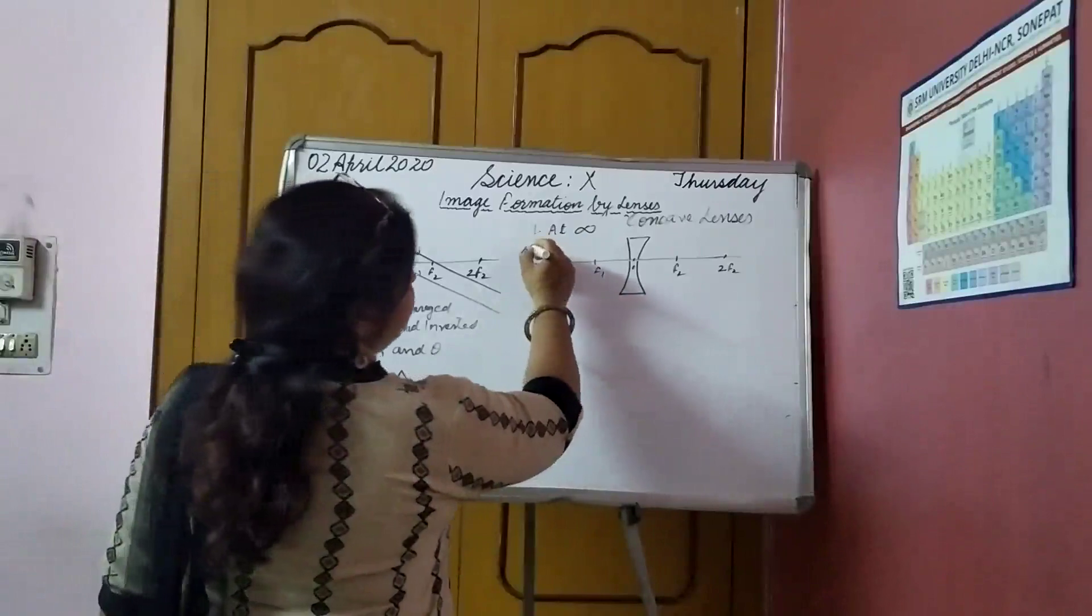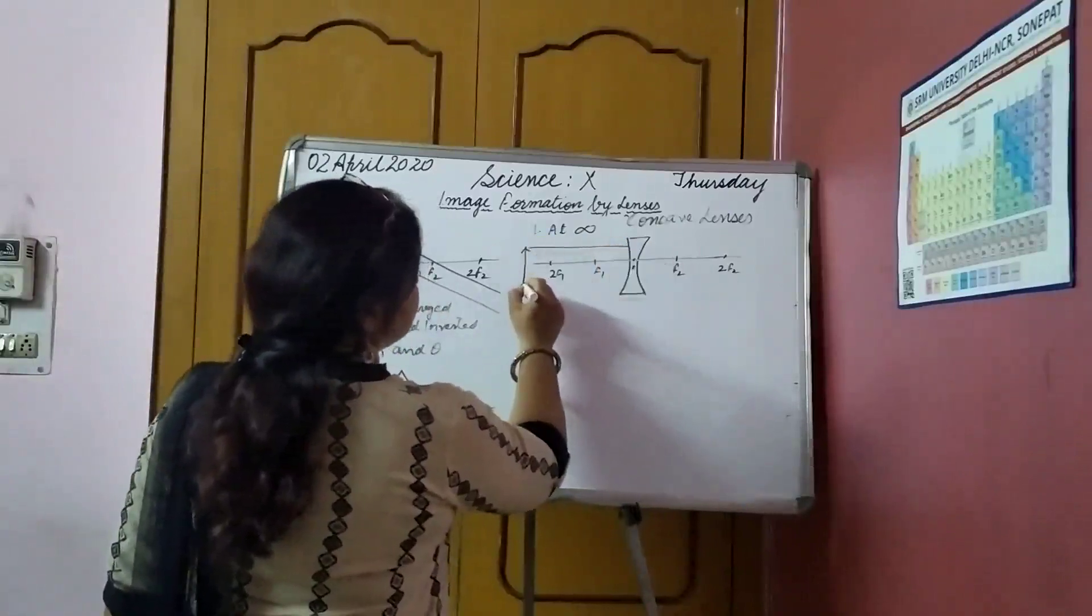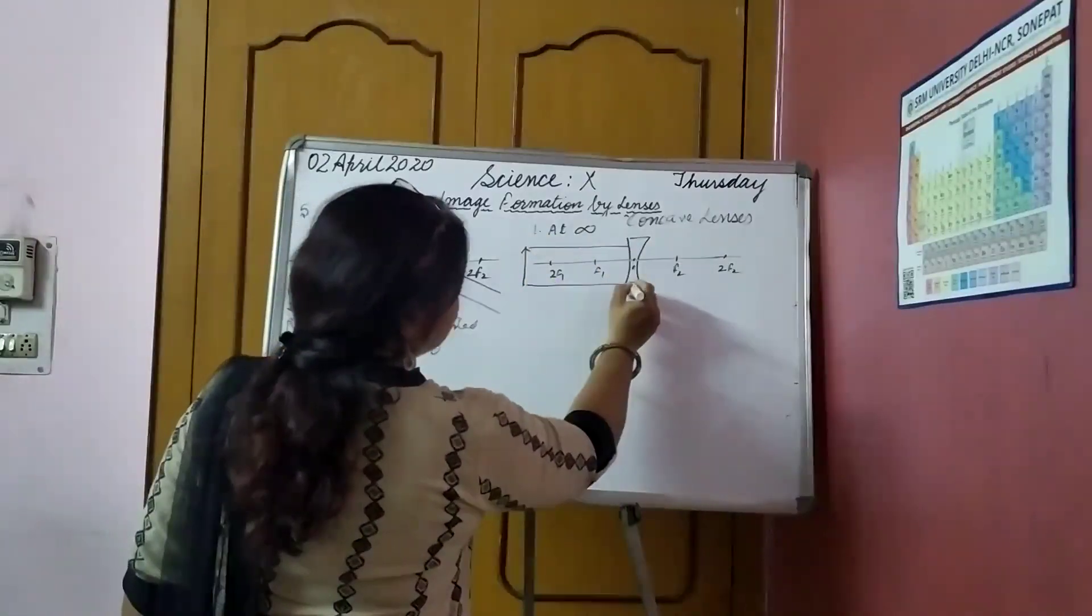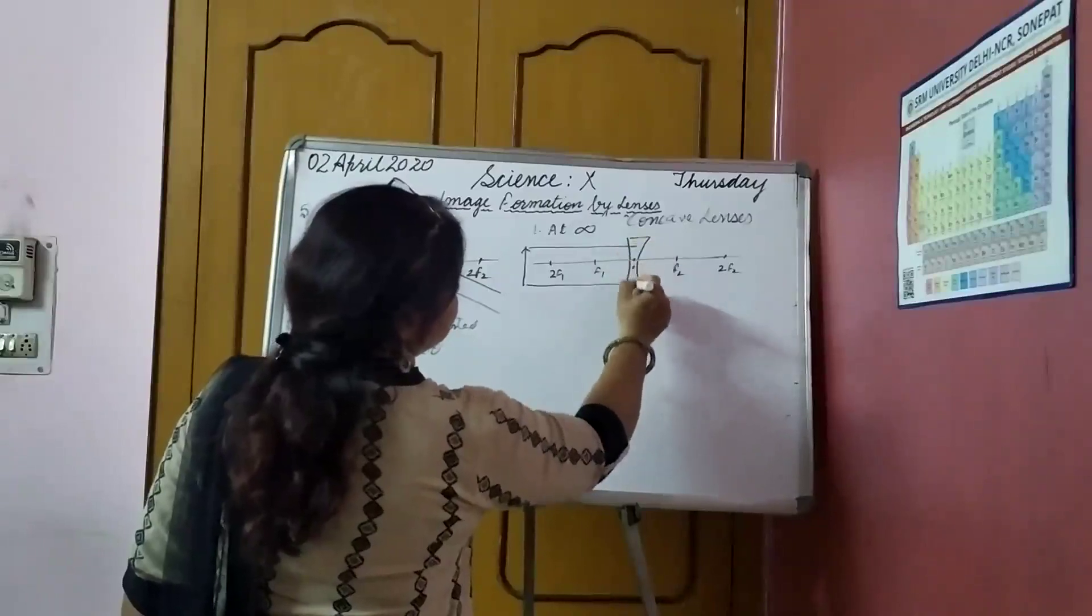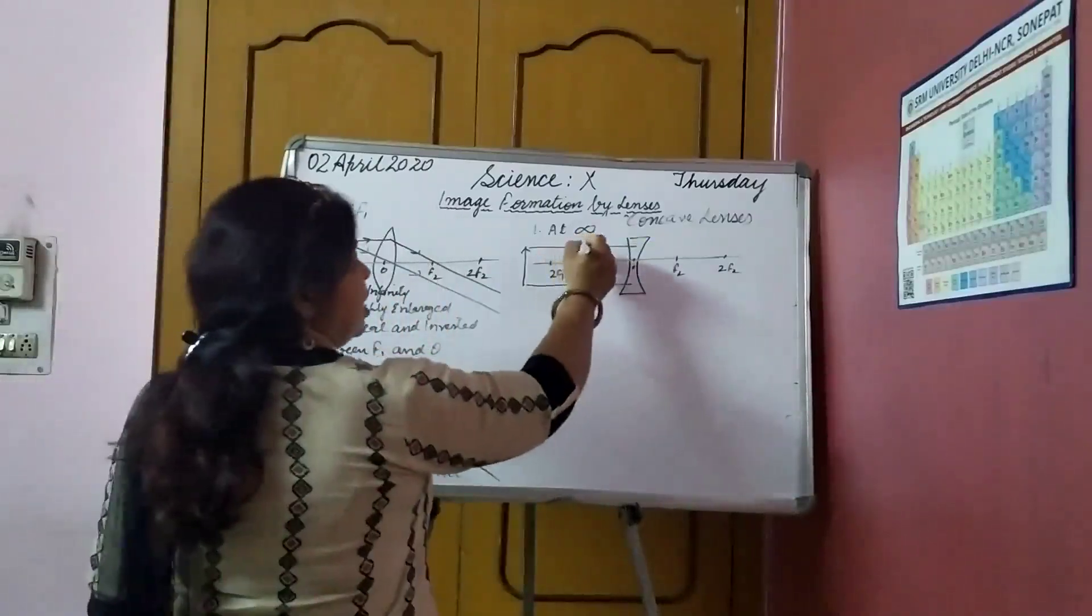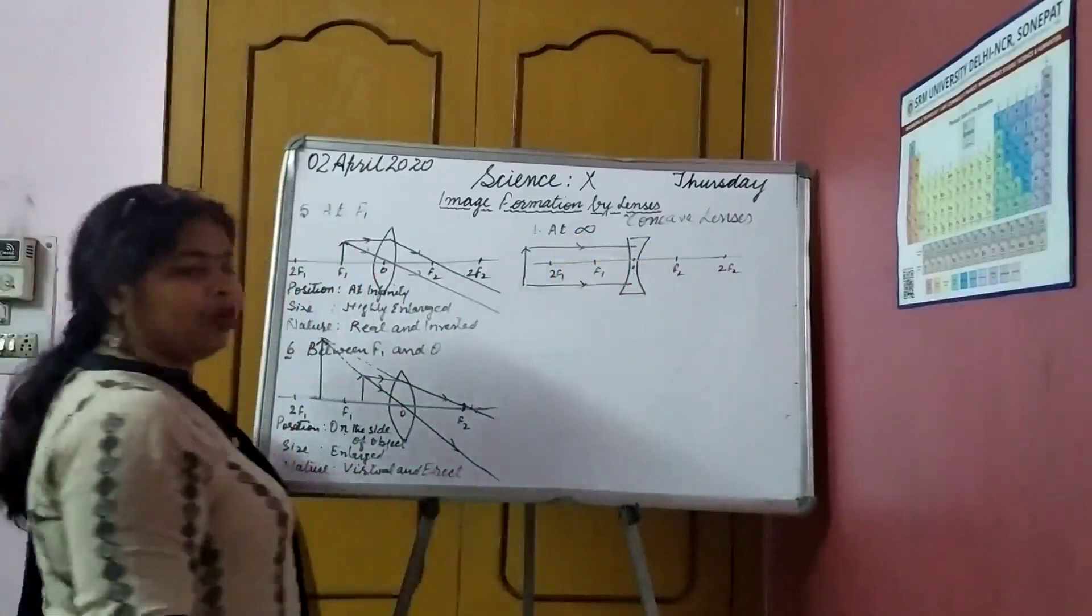Now, one of the rays, this one. Another ray, this one. It will come to the optical center. These are the incident rays. Now, what will happen?